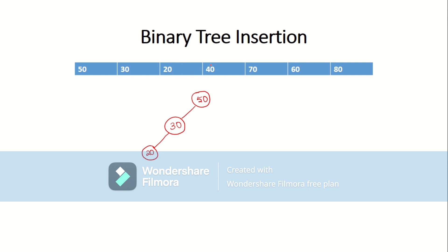The next number you want to insert is 40. 40 is less than 50, so go to the left subtree. Now here you see 40 is greater than this root, so it has to be inserted to the right.